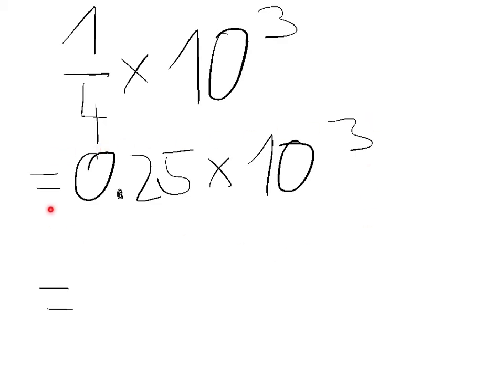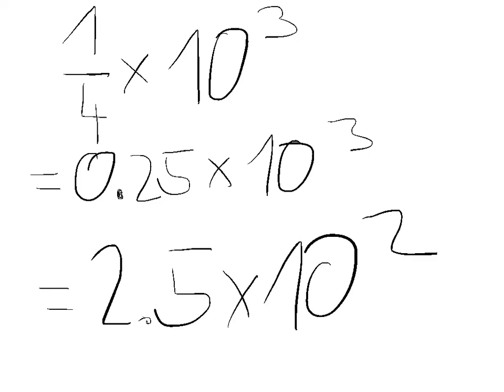Now we are nearly done, but the S is still not between 1 to 10. So we need to move this point here 1 to the right and if we do this we need to take 1 off the exponents so it would get 2. And so our final scientific notation is 2.5 times 10 to the second.